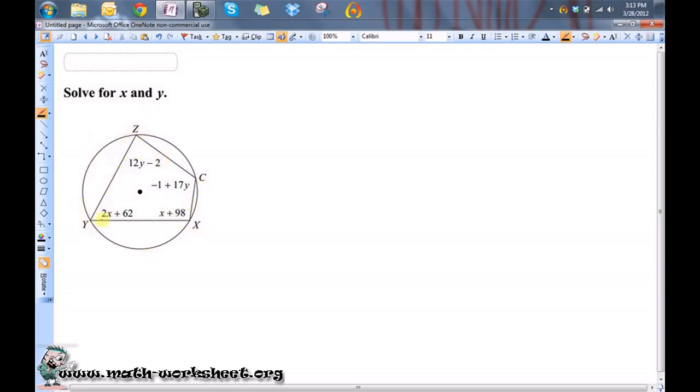Whenever you have a quadrilateral inscribed within a circle, the opposite angles are supplementary, which means their measures sum to 180.